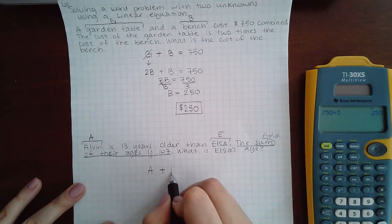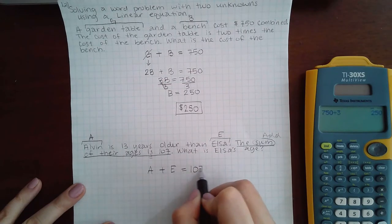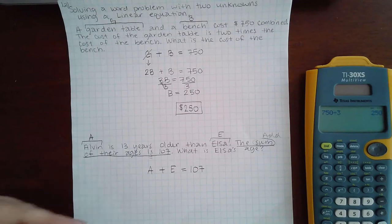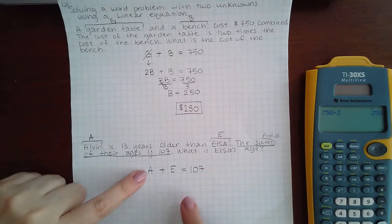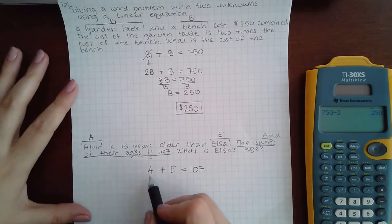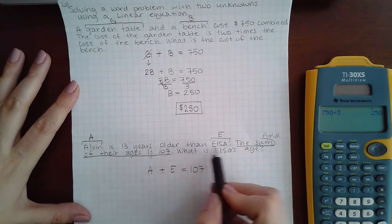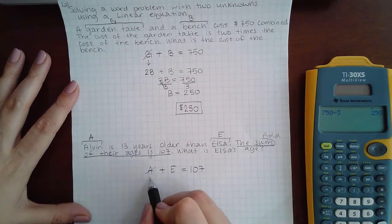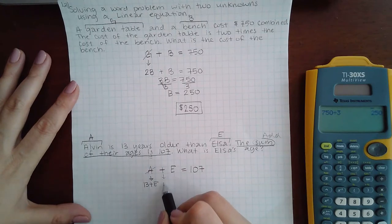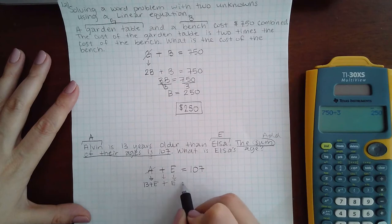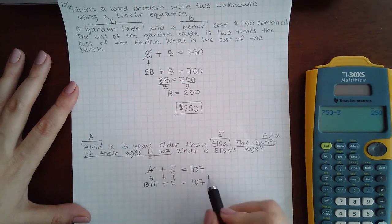Now the first sentence helps me to come up with an expression for Alvin. It says Alvin is 13 years older than Elsa, so instead of writing Alvin I'm going to write 13 years plus Elsa's years. I still need to bring down this plus sign and the original expression for Elsa, so I've got this expression that represents Alvin and this variable that represents Elsa.